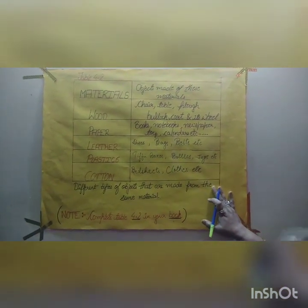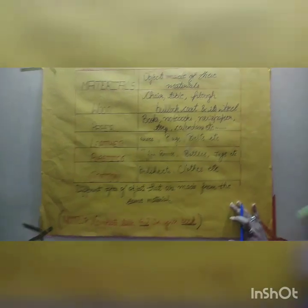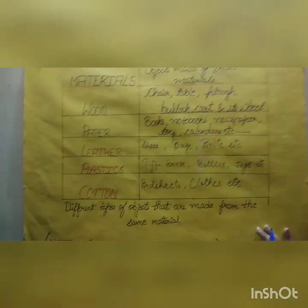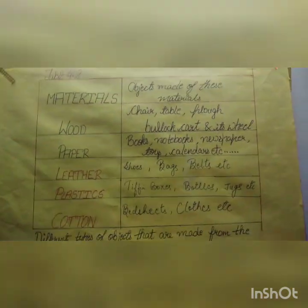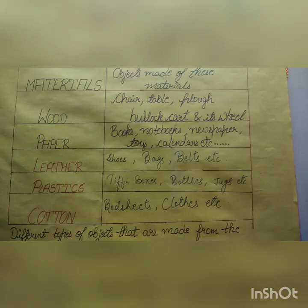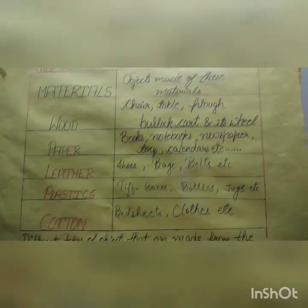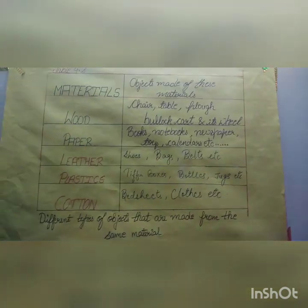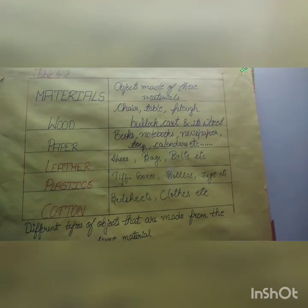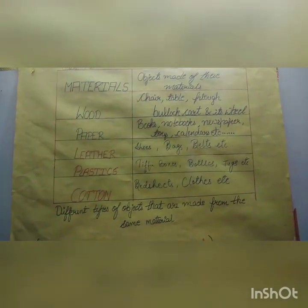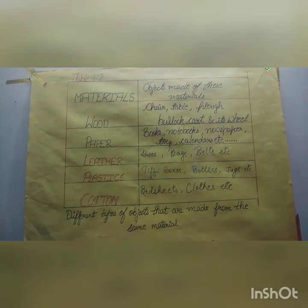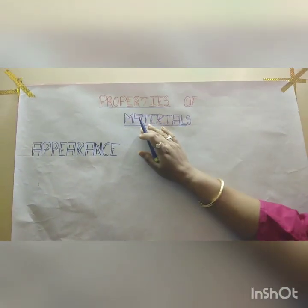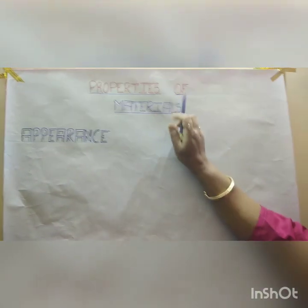Now let's start with the next topic, that is properties of material. The first property we will see is appearance — how after looking at any object you can identify what that object is or what it is known as. Let's have a look children, here comes the next topic: properties of material.